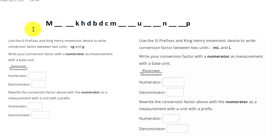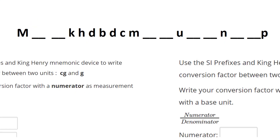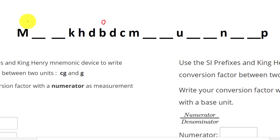Now, let's go back and figure out the value of the prefixes for each of the letters. We are going to start with the base, because base is the easiest one to memorize — it's 10 to the 0. Going toward Mega, the exponents increase by 1. Going toward the pickle, the exponents decrease by 1.